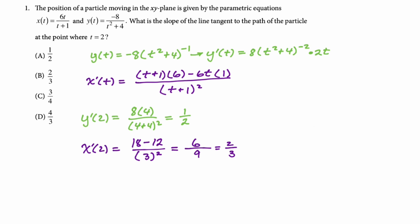Now to find dy dx we're just going to do y prime of 2 over x prime of 2 which in this case is 1 half over 2 thirds which is 3 fourths. So we are going to box c.